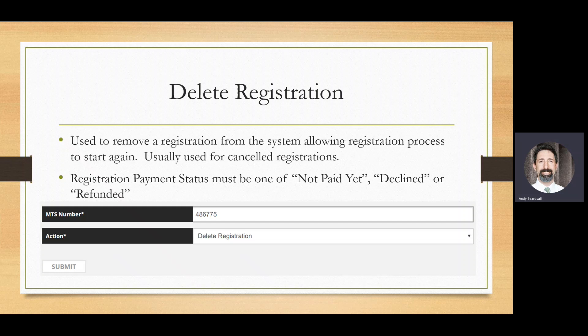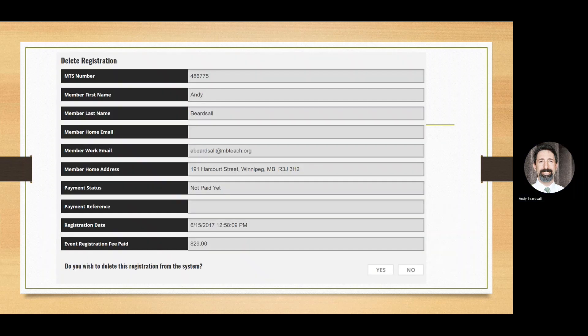Another option is to delete a registration, usually used to remove a registration after someone has cancelled. A key point is that cancelled registrants are still holding spots in sessions until you delete the registration. This is sometimes kept open in case someone accidentally cancelled. When you receive a cancellation email from the system, you should issue a refund if warranted, mark the person as not paid if they had previously paid, and then delete the registration to free up those spots. Again, once you hit submit, there's a confirmation page to make sure you're updating the right person.